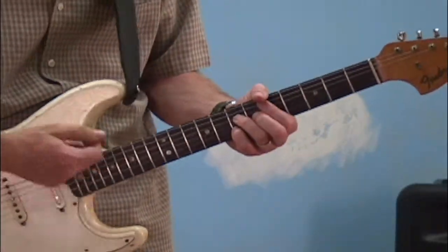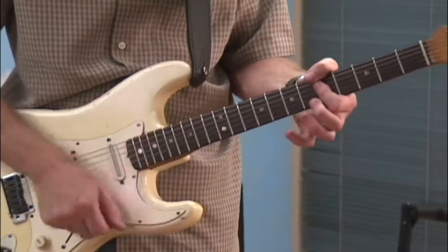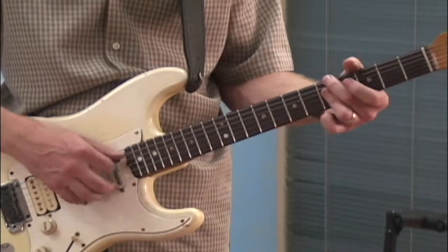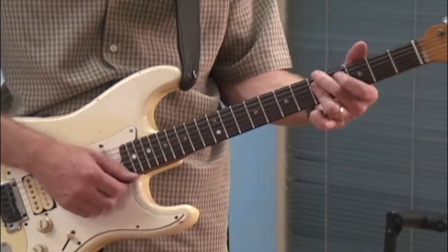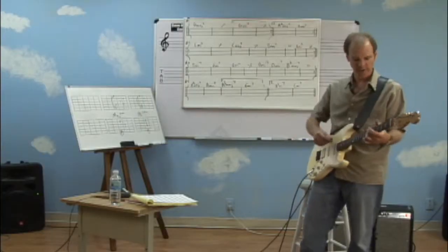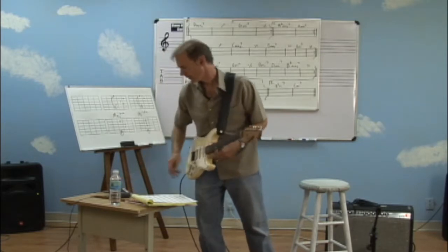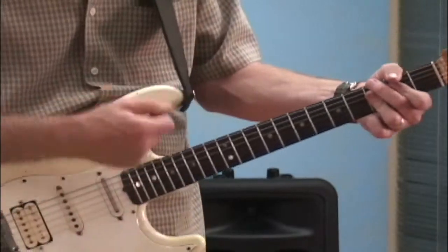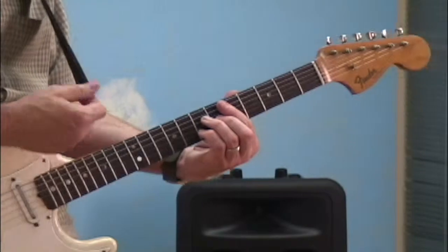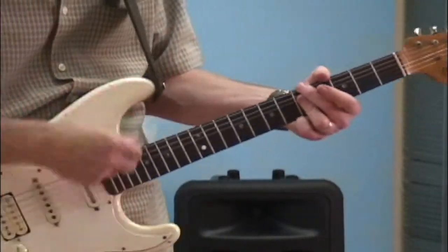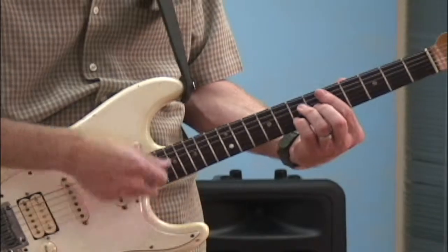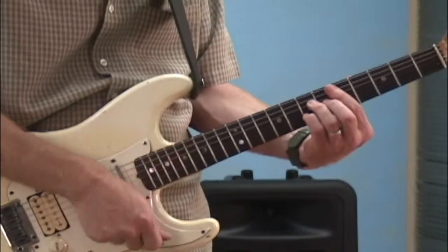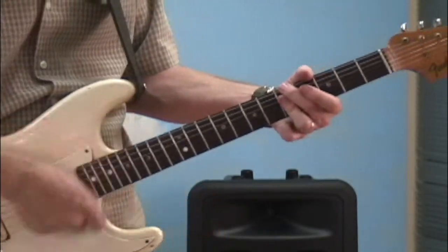Going back to the top: on the second ending, it goes B flat major 7th — which I also could have played higher up the neck — then G minor 7th, then down to A minor 7th. So I can go B flat, A minor, or B flat, A minor. Here we go — one, two, three, four.